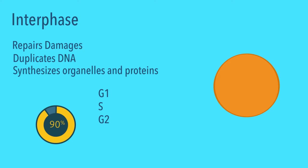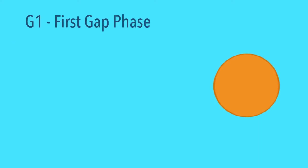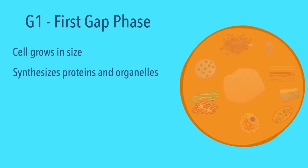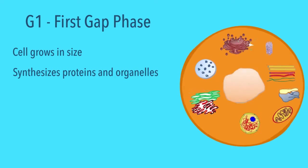There are three phases to this: G1, S, and G2. The G1 phase, also known as the first gap phase, is the first step of interphase. The cell grows in size, and new proteins and organelles are synthesized for the cell to function.